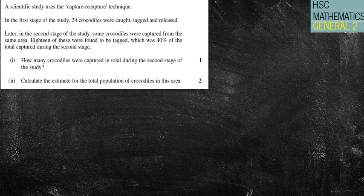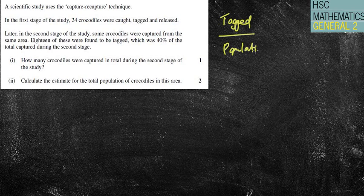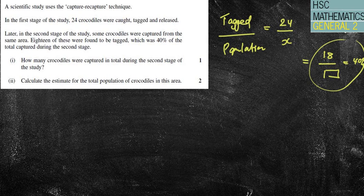Next question. A scientific study uses the capture-recapture technique. In the first stage of the study, 24 crocodiles were caught, tagged, and released. So if we're looking at our tags over our population, like I've done previously, we're looking at our 24 over our unknown. Later in the second stage of the study, some crocodiles were captured from the same area. 18 of these were found to be tagged, which equaled, so 18 were tagged out of, well, in this case, we're not told how many we actually recaptured, which was 40% of the total captured during the second stage. So this is slightly more challenging.